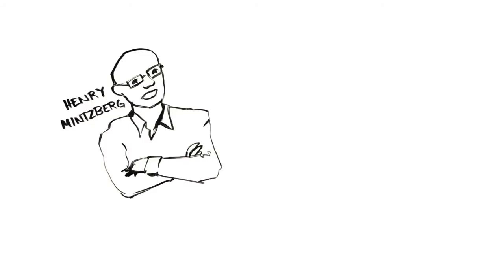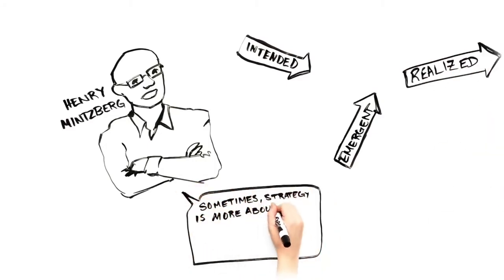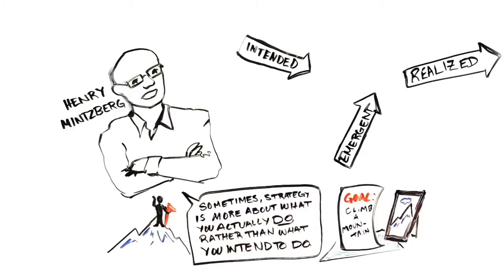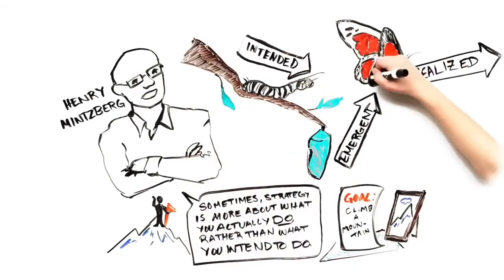For example, Henry Mintzberg, one of the most well-respected business strategists of our day, would want to emphasize the important differences between an intended strategy, an emergent strategy, and a realized strategy. He would want you to know that sometimes strategy is really more about what you actually do rather than what you intend to do. That is, your real strategy emerges as you do it and may not line up with your plans.